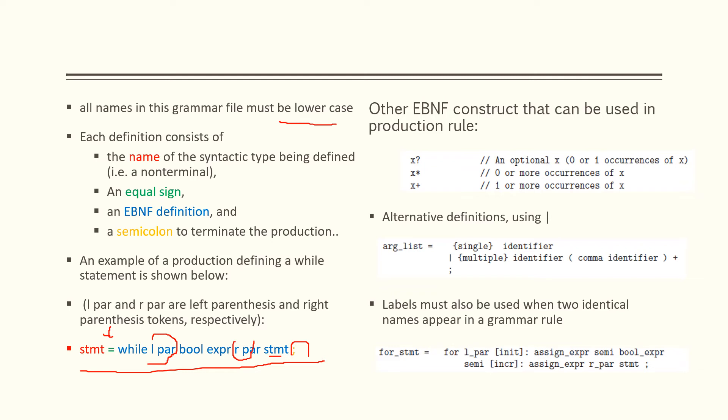Other BNF constructs that can be used in production rules include: a question mark symbol for zero or one occurrence of X (optional), a star for zero or more occurrences of X, and a plus for one or more occurrences. These are actually regular expressions that you can use in the grammar.